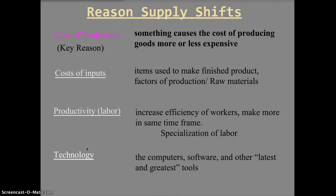Productivity and technology are also reasons for supply shifts. If workers become more efficient — through specialization of labor, for example — you can produce more at the same cost. New technology, like replacing workers with robots, improves efficiency. If technology breaks down, production costs go up and the supply curve shifts to the left.